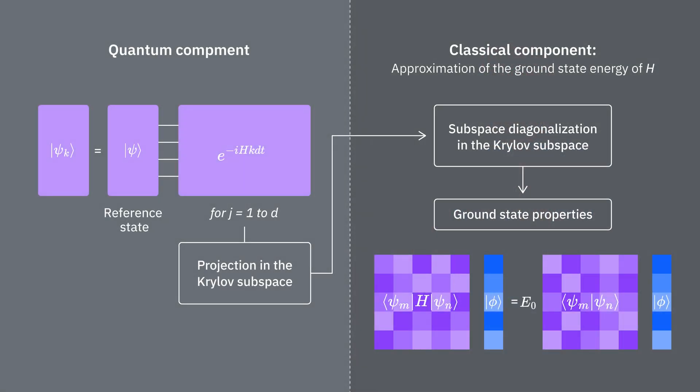To recap, we start with a reference state, then evolve it for different periods of time to generate the unitary Krylov subspace. We project our Hamiltonian onto that subspace, and we also estimate the overlaps of the subspace vectors. Finally, we solve the lower-dimensional, generalized eigenvalue problem classically.